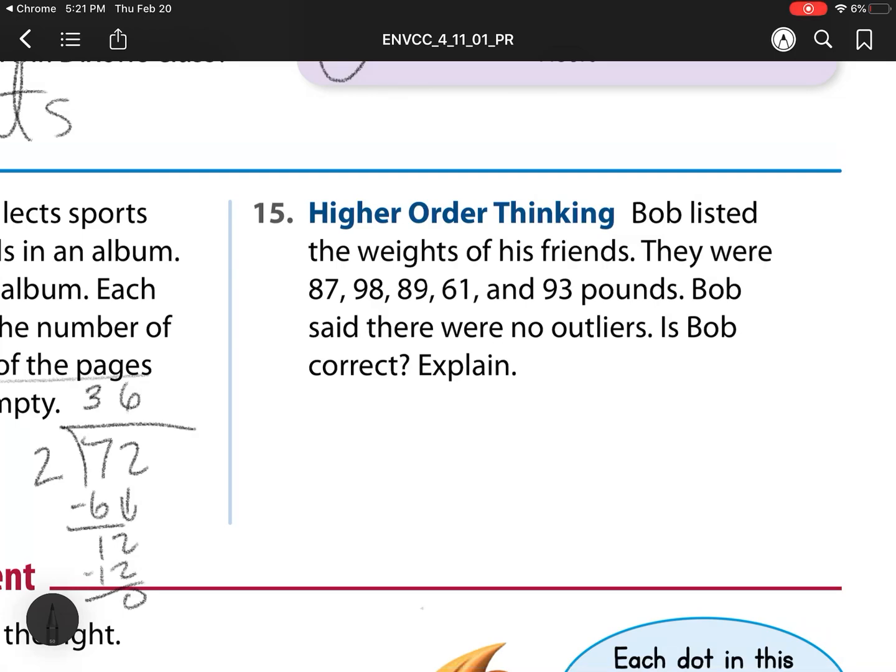Bob listed the weights of his friends. They were 87, 98, 89, 61, 93. Bob said there are no outliers. Is he correct? Well, let's check. So we're looking at are there any that are not too close together? So on a number line, we would have what? Let's start with 60. Then we would have 70, 80, 90, and 100. So let's just roughly plot them. 87 would be between 80 and 90. 98 would be close to 100. 89 is a little bit closer to 90. 61 is over by 60, and 93 is close to 90.